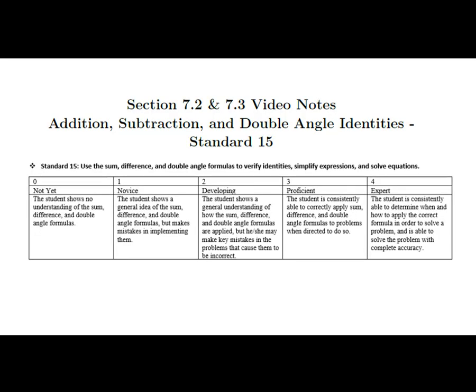In calculus, we need to be able to take trigonometric expressions and write them in different ways that may lead to an easier time solving particular problems. We've already looked at the Pythagorean identities and how we define tangent, secant, and all those as well. But now we're going to expand the list of identities to know, looking at addition, subtraction, and double angle identities and a few other related identities.